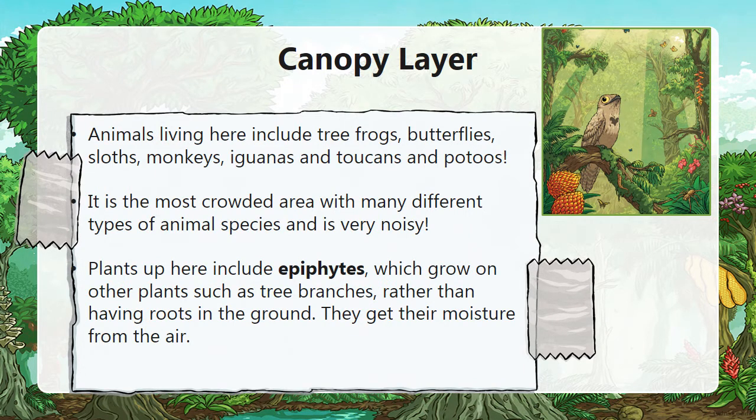Animals living in the canopy include tree frogs, butterflies, sloths, monkeys, iguanas, toucans and parrots. This is the most crowded area with many different types of animal species and it is very busy. Plants up here include epiphytes, which grow on other plants such as tree branches rather than having roots in the ground — they get their moisture from the air.